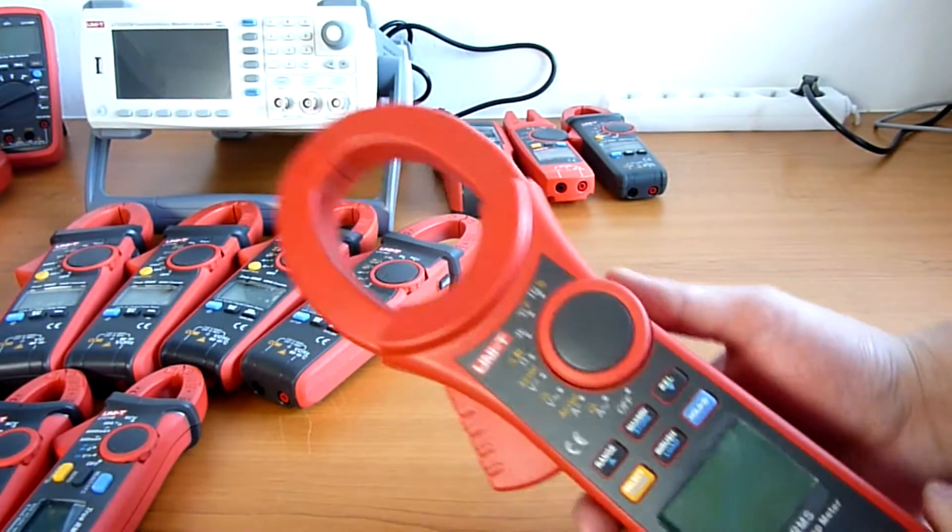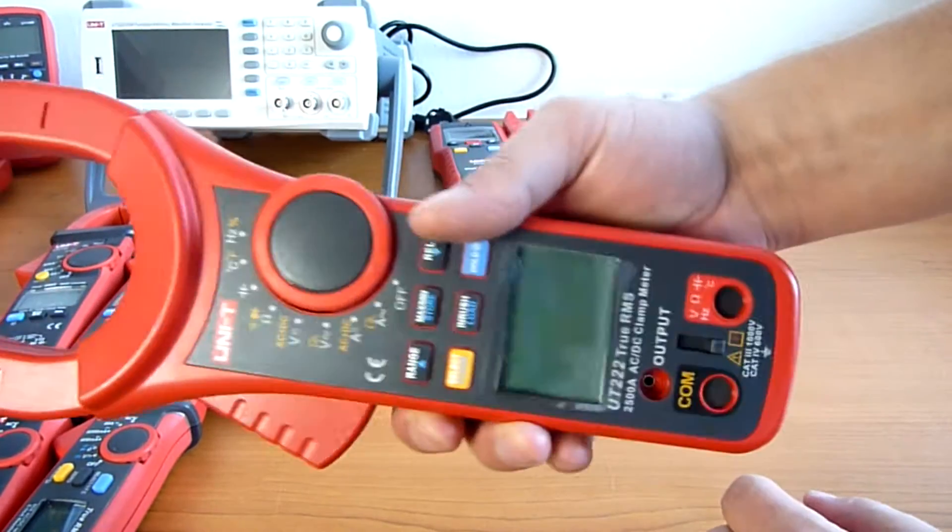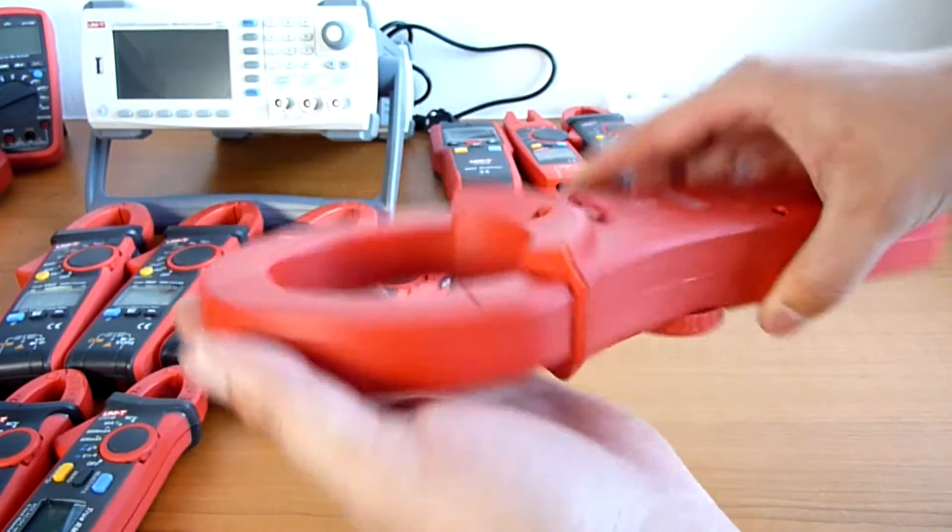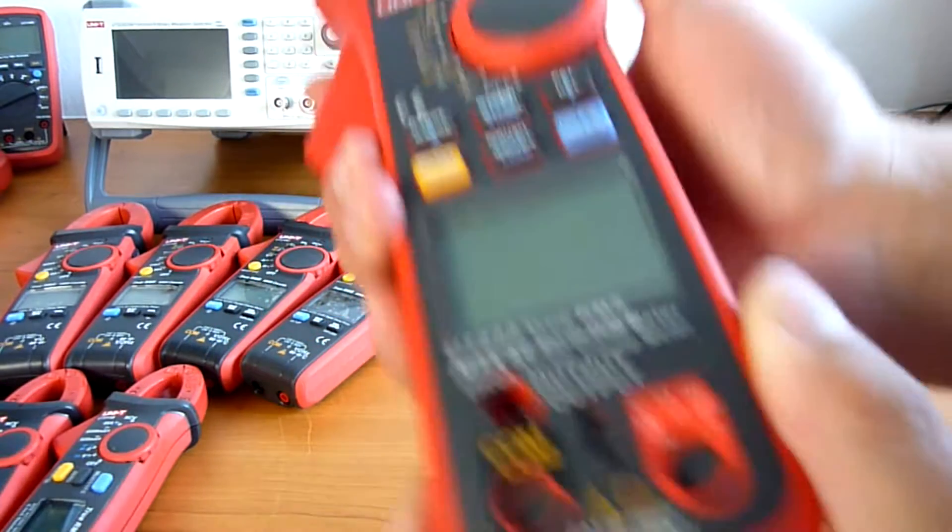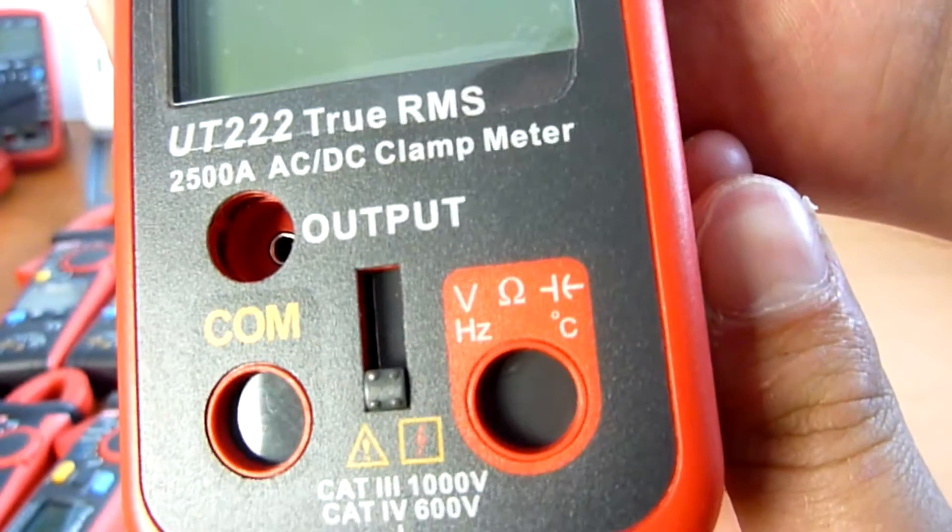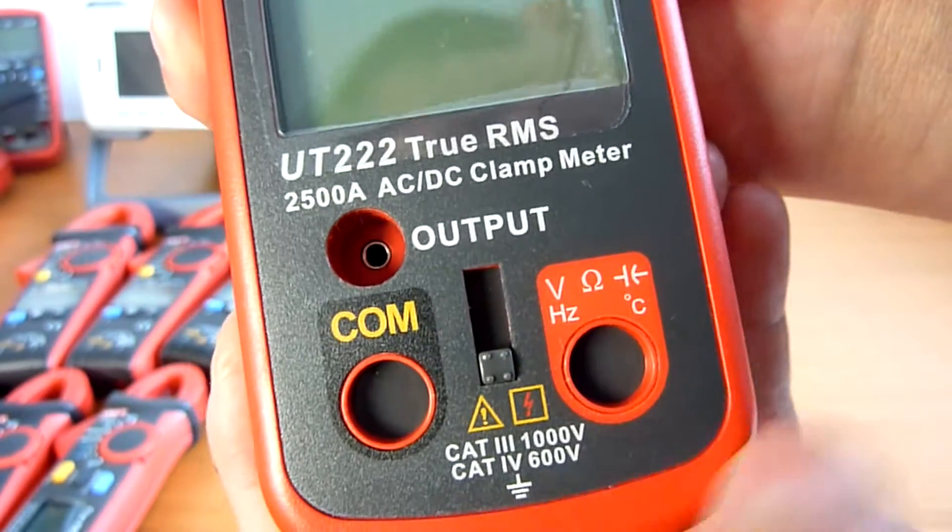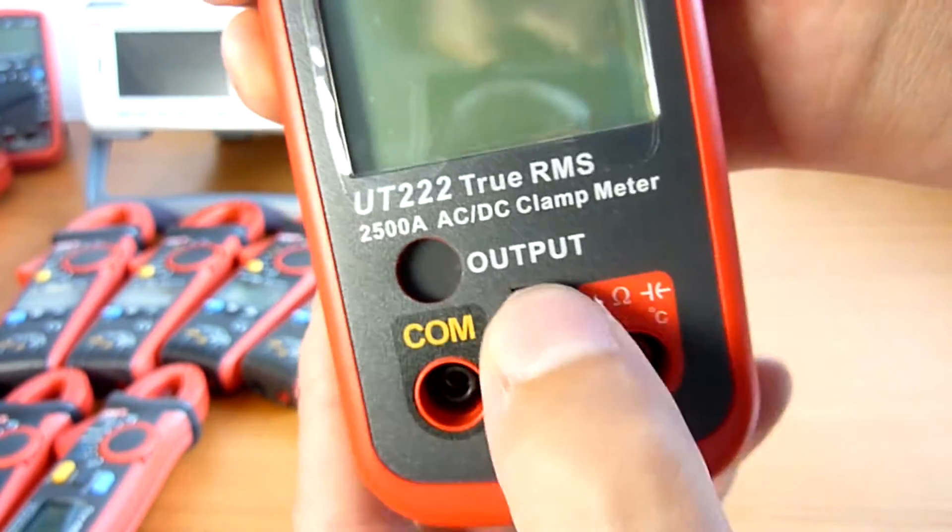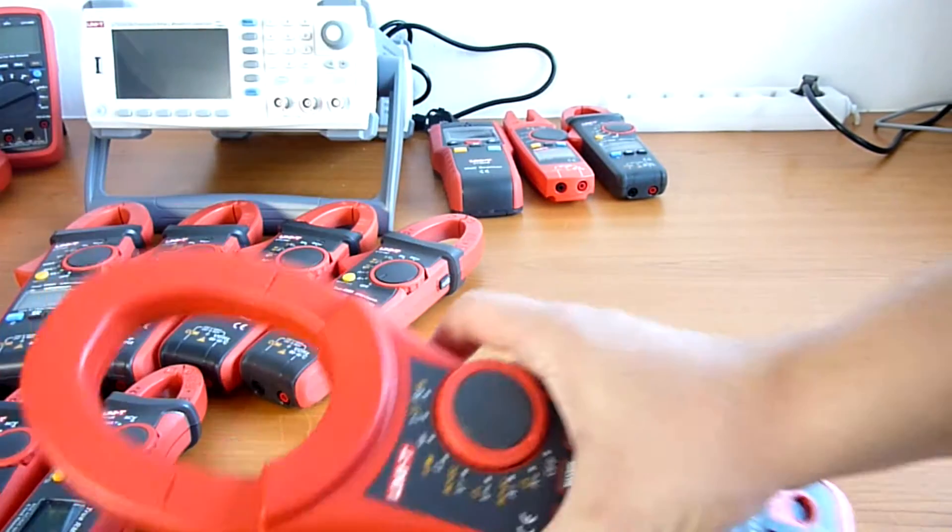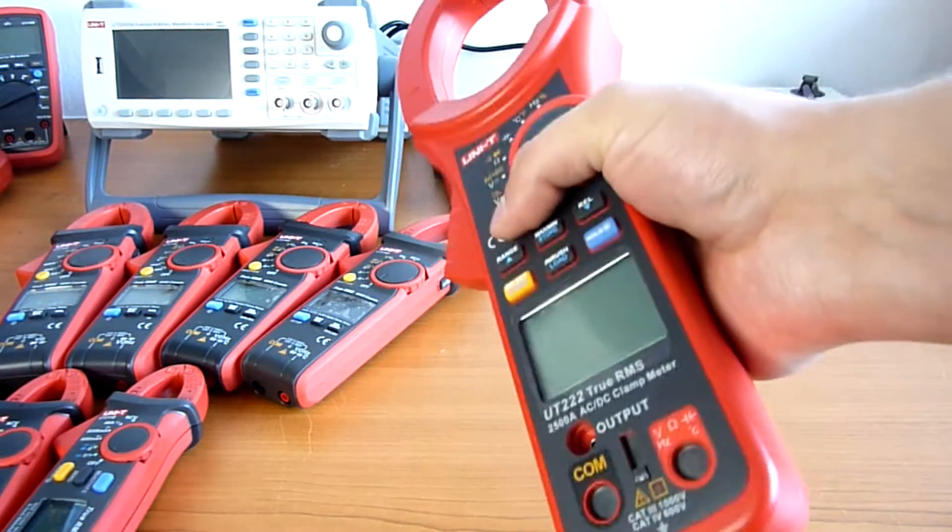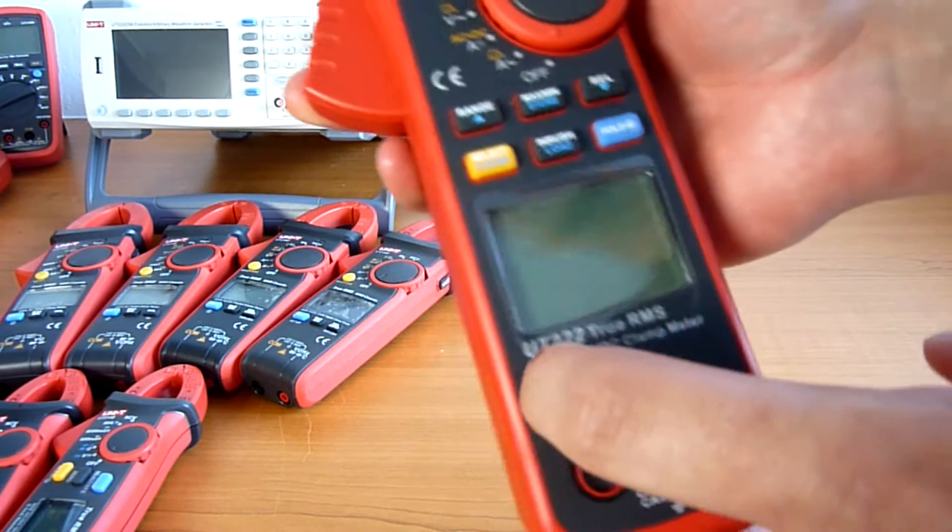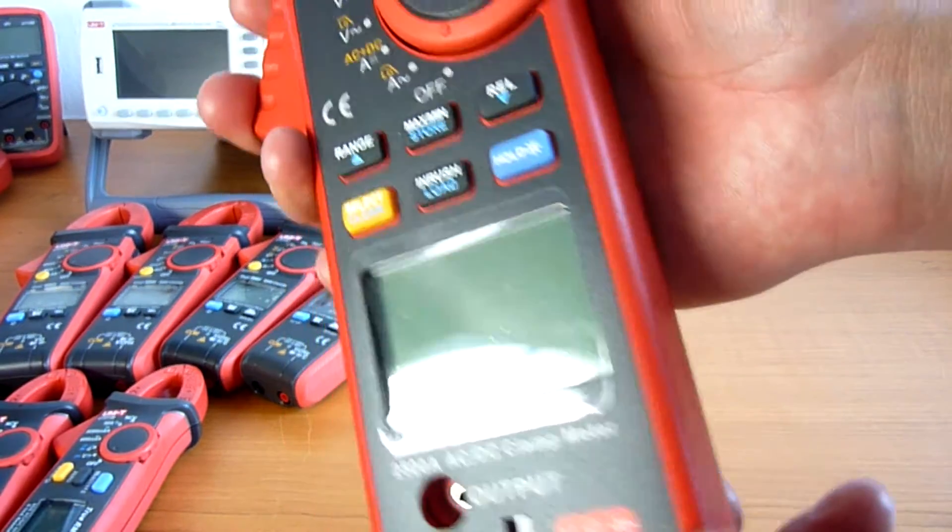Here we have an industrial high current clamp multimeter with huge clamps, currents up to 2500 amps, with a very special function. You see there is also an output and a mechanical switch. The output basically allows you to use your oscilloscope and display like 2000 amperes converted to millivolts through here. It's a very handy function.